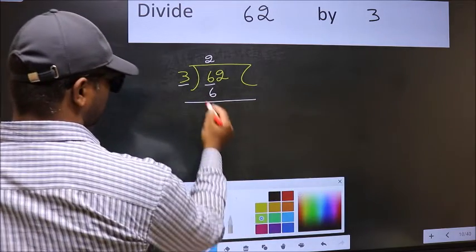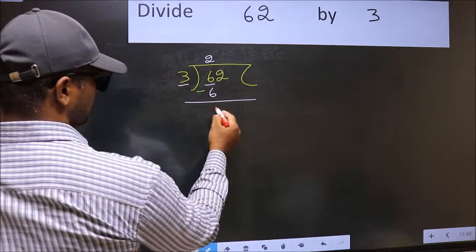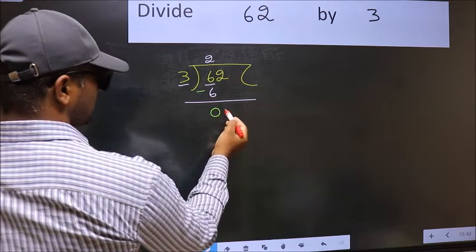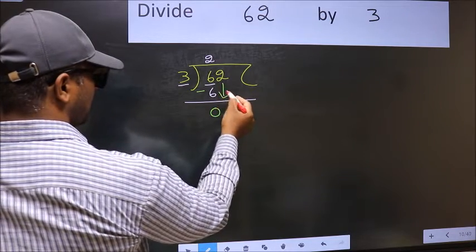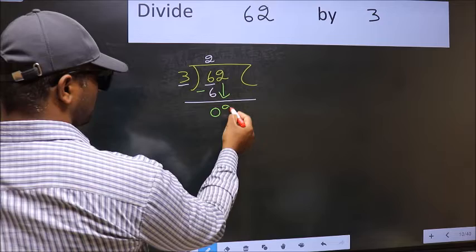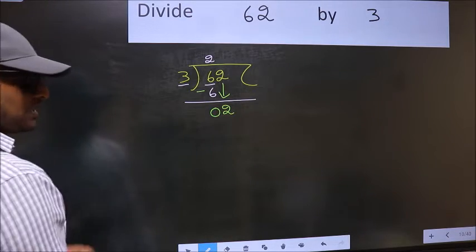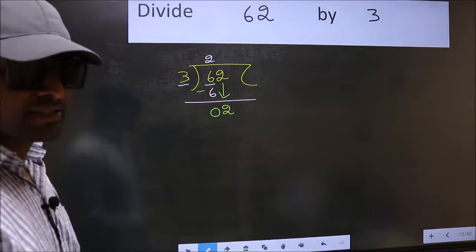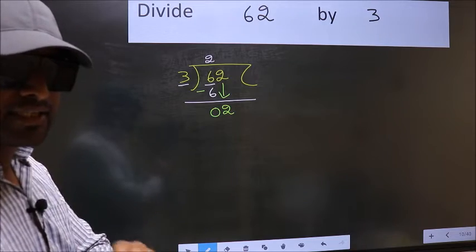Now you should subtract. 6 minus 6 is 0. After this step, bring down the beside number, so 2 down. After this step, the mistake happens.